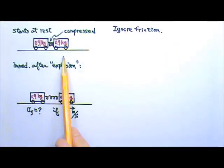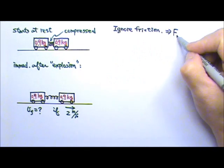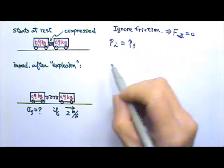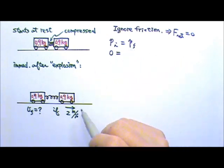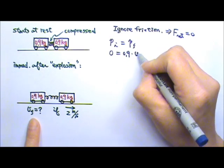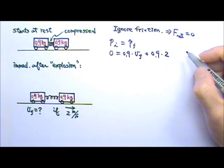If each cart is 0.9 kg, and immediately after the explosion, this cart moves to the right at 2 m per second. What is the velocity of the other cart? If we ignore friction, that means the net force on the whole system is zero. That means the momentum is conserved. At the beginning, both carts were at rest, so there is no momentum. That means that after the explosion, the total momentum should still be zero. Afterwards, this cart has a momentum of 0.9 times the final velocity we're looking for, and the other cart has 0.9 times 2 m per second. So from here,